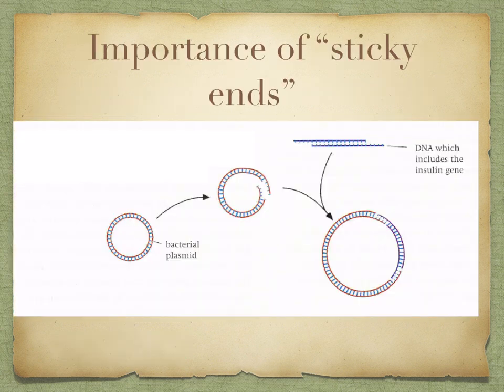Once the appropriate fragment of DNA has been cut from the rest of the DNA, the next task is to join it into a carrying unit known as a vector. This vector is used to transport the DNA into a host cell. Before we look at how this is carried out, let's first consider the importance of the sticky ends left when DNA is cut by restriction endonucleases.